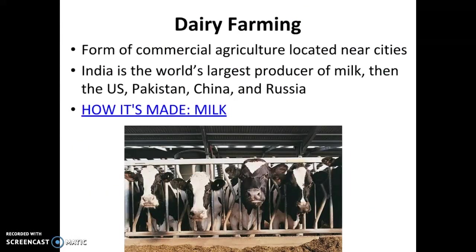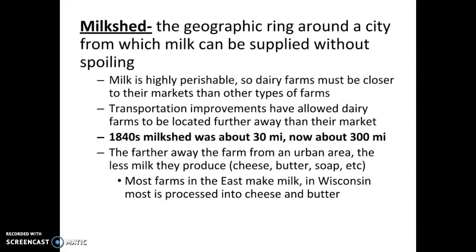When looking at the location of dairy farms, they lie in what we call a milkshed — a geographic ring around a city, or market area, from which milk can be supplied without it spoiling. Milk is highly perishable even with pasteurization and homogenization today. Dairy farms have to be closer to markets than other types of farms. In the 1840s, the milkshed was about 30 miles away; now it can extend up to about 300 miles, usually transported by truck.